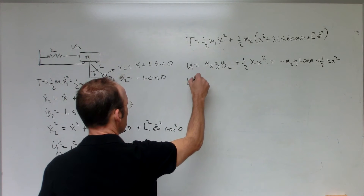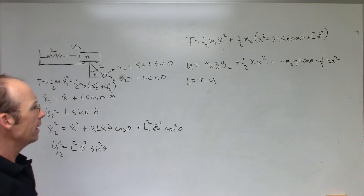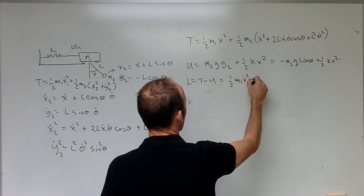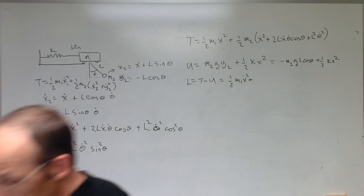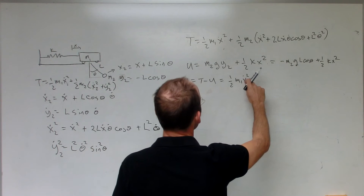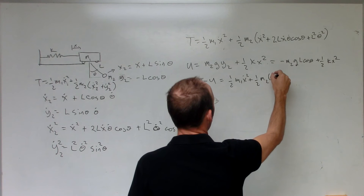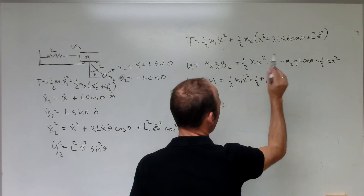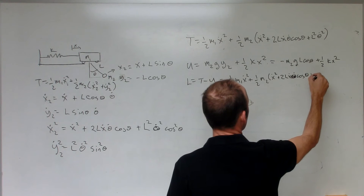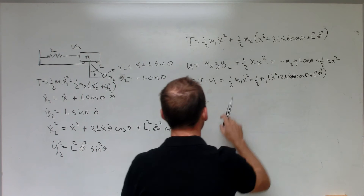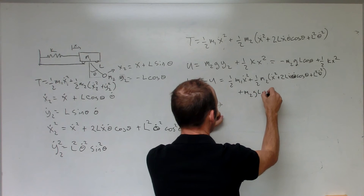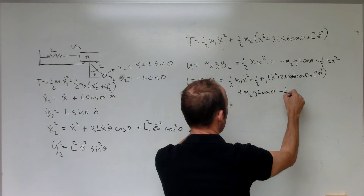So the Lagrangian is L equals T minus U. Writing that out: L equals one half m1 x-dot squared plus one half m2 times (x-dot squared plus 2l x-dot theta-dot cosine theta plus l² theta-dot squared) minus U, which gives plus m2 g l cosine theta minus one half k x squared.